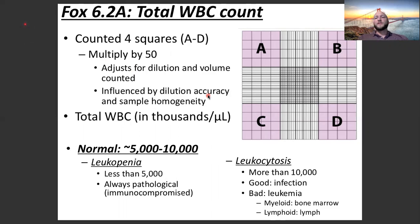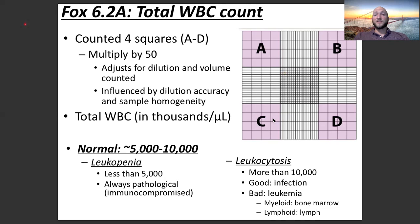The main differences between a total white cell count and a red cell count come down to which squares you count. When you look through the microscope at the hemocytometer, it can be tough to orient where you are. It looks different depending on your magnification, and it's really easy to get lost on this grid when you can only see a small portion of it. That's probably one of the hardest parts of this experiment — getting oriented on the hemocytometer.